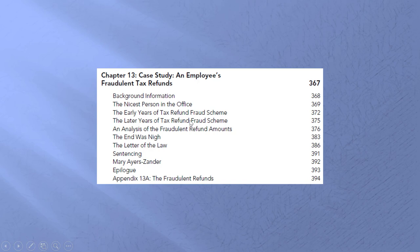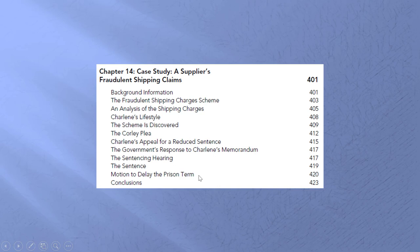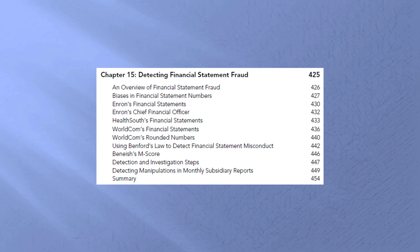This is the first of two case studies, looking at fraudulent tax refunds. The especially nice thing about this case is that the fraud data is all here — the actual numbers. We can run analytics on those numbers, and I have two case studies dealing with exactly those fraud figures. The next case involves fraudulent shipping claims. We talk about how the system worked and, at the end, which controls were deficient and which tests might have detected this fraud before it reached 20.5 million dollars.